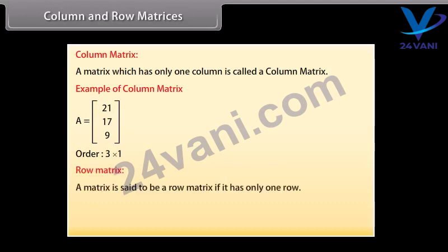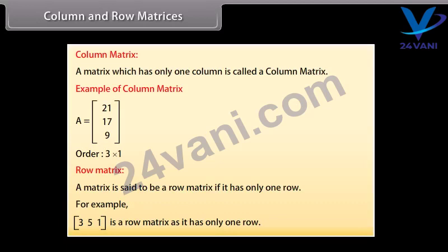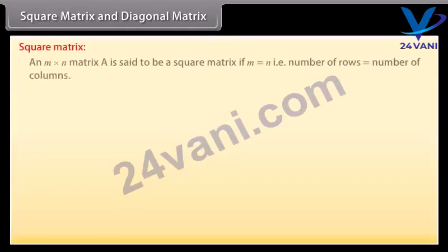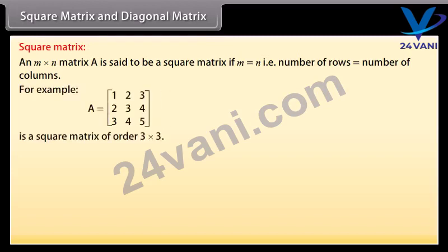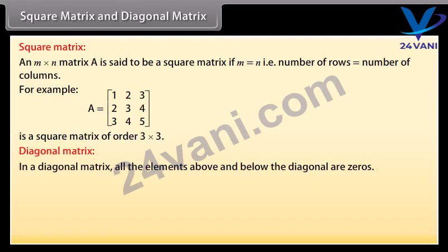Row matrix: a matrix is said to be a row matrix if it has only one row. For example, row-wise, 3, 5, 1 is a row matrix as it has only one row. Square matrix: an M by N matrix A is said to be a square matrix if M equals N, that is, number of rows equals number of columns. For example, A is a square matrix of order 3 by 3. Diagonal matrix: in a diagonal matrix, all the elements above and below the diagonal are zeros. For example, B is a diagonal matrix.